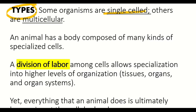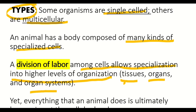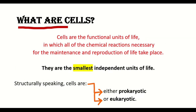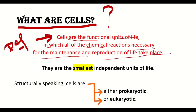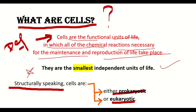Types: some organisms are single-celled, others are multicellular. An animal has a body composed of many kinds of specialized cells. A division of labor among cells allows specialization into higher levels of organization — the tissue, organ and organ systems. Yet everything that an animal does is ultimately dependent on the cell. Cells are the functional units of life in which all of the chemical reactions necessary for the maintenance and reproduction of life take place. They are the smallest independent units of life. Structurally speaking, cells are either prokaryotic or eukaryotic.